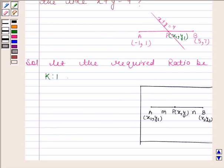We have learned in the section formula that coordinates of a point P which divides the line segment in the ratio m is to n are: x equals mx2 plus nx1 upon m plus n, and y equals my2 plus ny1 upon m plus n.